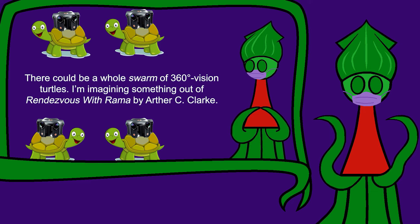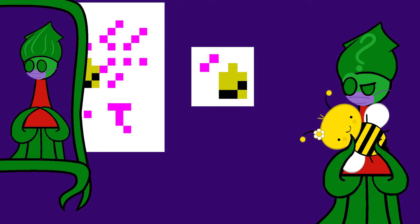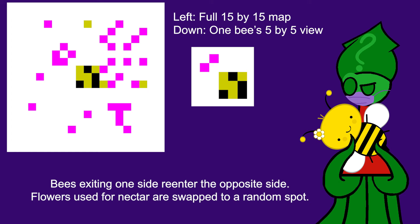Last time, I said I wanted to simulate a swarm of turtles, but learning more about free energy has convinced me to turn the turtles into bees. I made an animation to describe what I've got in mind. This is a grid. Yellow tiles are bees, pink tiles are flowers, and black tiles are the hive.